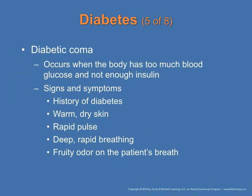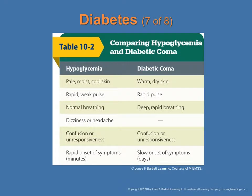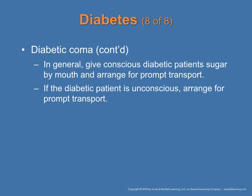DKA — diabetic coma — occurs when the body has too much blood glucose and not enough insulin. Signs include history of diabetes, warm and dry skin, rapid pulse, deep rapid breathing, and a fruity odor to the breath. Symptoms include weakness, nausea, vomiting, increased hunger, frequent urination, and slow onset of symptoms that can take days — it can be misdiagnosed. In general, give conscious diabetic patients sugar by mouth and arrange for prompt transport. If the patient is unconscious, arrange for prompt transport regardless.